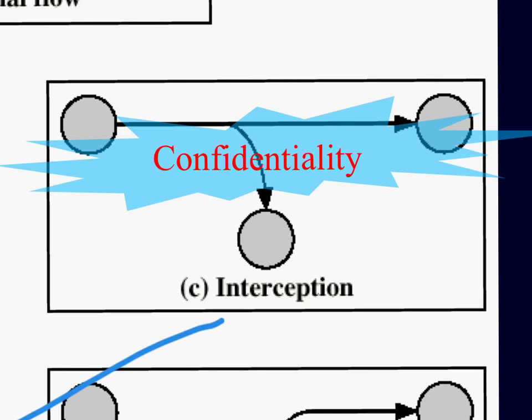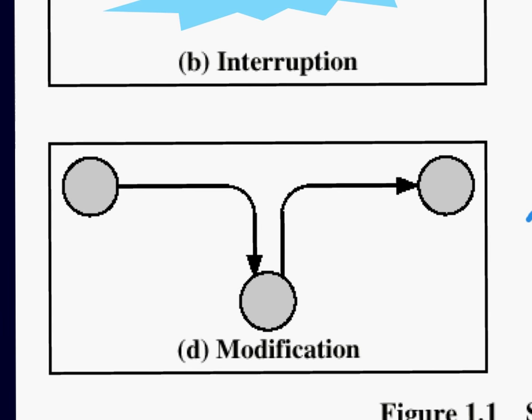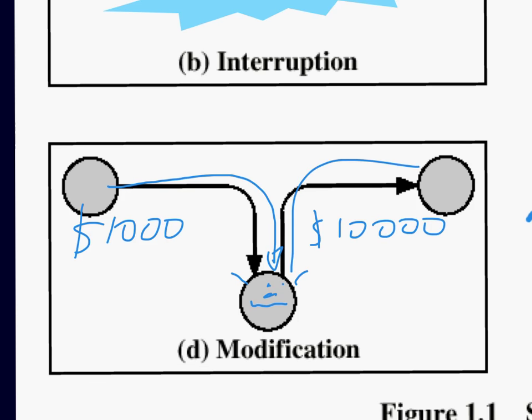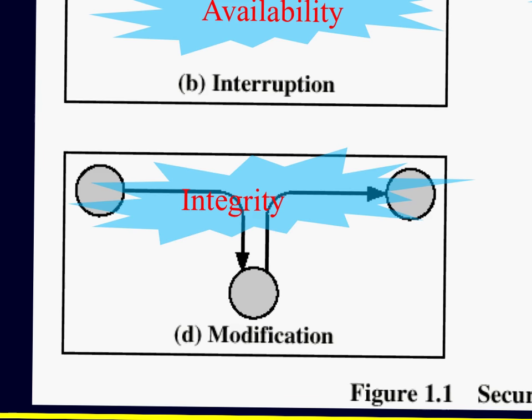What about modification? You send $1,000 to an account, but Mr. Evil intercepts and changes it to $10,000 — you're suddenly $9,000 out of money. That's a classic example of an integrity attack.